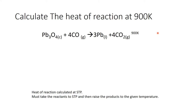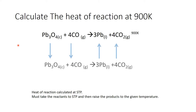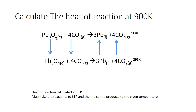We're going to work it out the long way first, where we calculate the heat of reaction at STP. To do that, we have to take the reactants to STP and then raise the products to the higher temperature. We're going to lower the reactants to room temperature, calculate the heat of reaction, and then raise the products to the elevated temperature of 900 Kelvin.